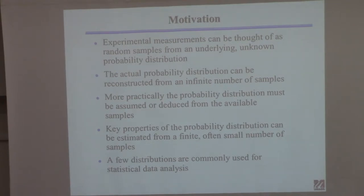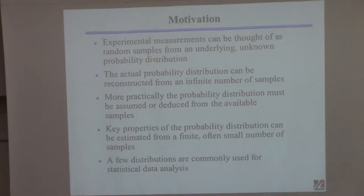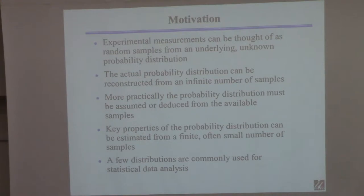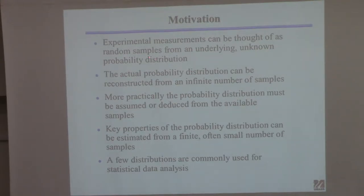I kind of said this the first day when I talked about statistics. If you're doing an experiment — say you go into the 401 or 402 lab, which you'll do in a few years — you'll do some experiments on some piece of equipment and collect data. One way to think about this: each measurement you obtain, which we call a sample, is a random sample, meaning it's drawn in an unbiased way from some underlying unknown probability distribution. That means some things are more likely to occur than others. When you do an experiment, you're taking a sample from this distribution.